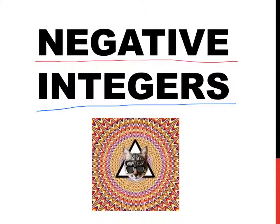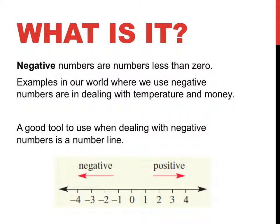Negative integers. So negative numbers are numbers that are less than zero. Examples in our world where we use negative numbers are when we're dealing with temperature and money. They're just two examples. I use them all the time.